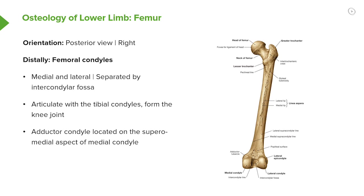Distally we can now clearly see large femoral condyles. We can make out the lateral epicondyle, and the medial epicondyle would be on this side. On the medial epicondyle we can see an adductor tubercle, which is an important attachment. The femoral condyles — medial and lateral — are separated by the intercondylar fossa, which contains the cruciate ligaments and articulates with the tibial condyles to form the knee joint. The adductor tubercle is located on the supramedial aspect of that medial condyle.